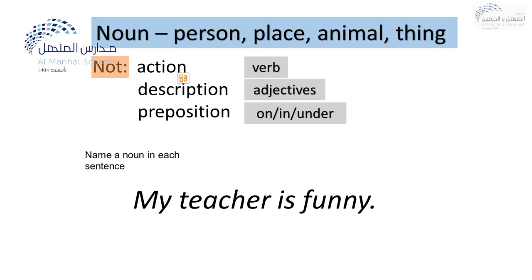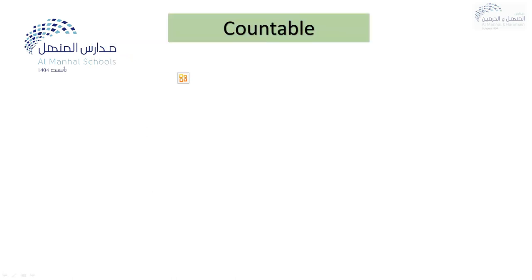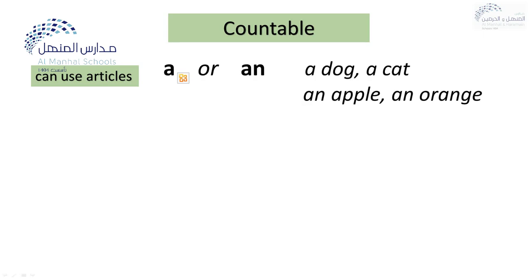So what is the noun in this sentence? Teacher. So teacher is a noun. Let's go to the countable nouns and uncountable nouns. What are countable nouns? Countable nouns — we can use articles. Articles like a or an. I can say a dog, a cat, an apple and an orange.